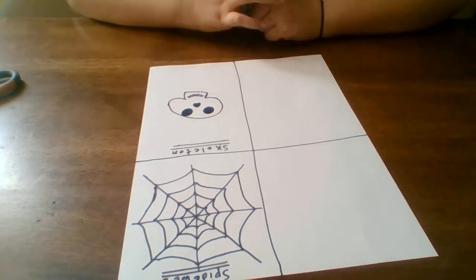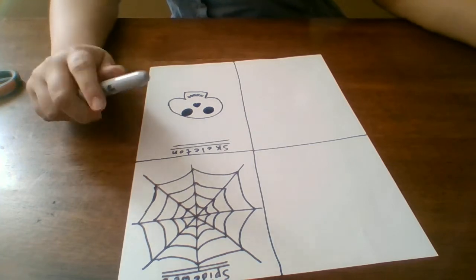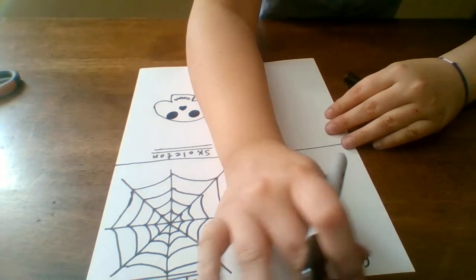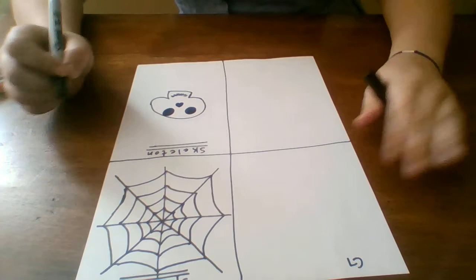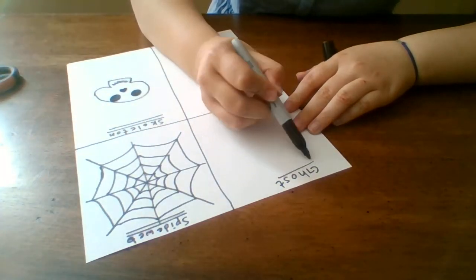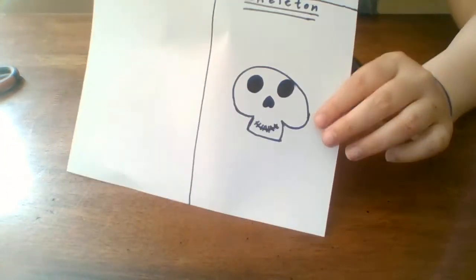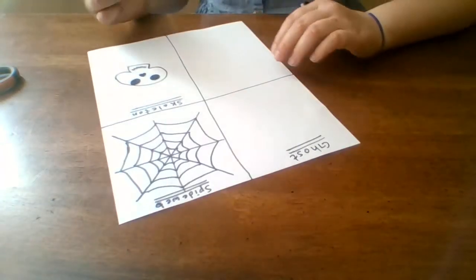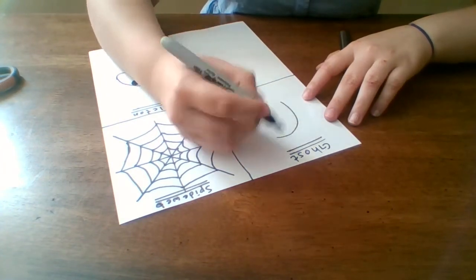For our next one is a classic Halloween one. A ghost. Hold on. I have to go grab something. Just reminding you, I've done our skeleton and our spider web. So, now we're going on to our ghost. What you're going to start off with is like an upside down U.